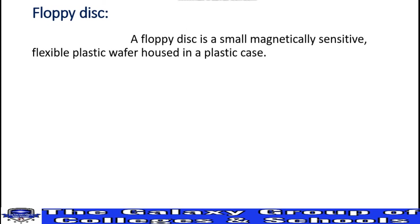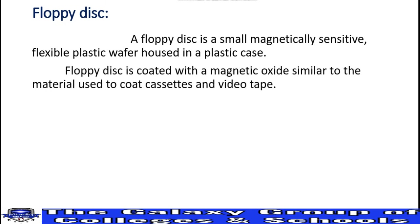For example, one type of magnetic disc is the floppy disk. The floppy disk is small, magnetically sensitive, and flexible — it is a plastic wafer housed in a plastic case. It is coated with magnetic oxide. The floppy disk is small and magnetically sensitive, coated with magnetic oxide.